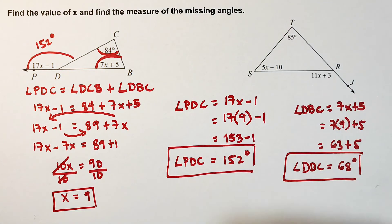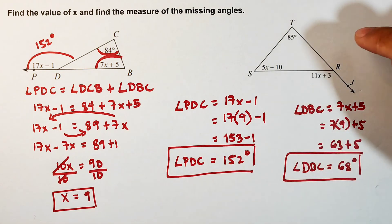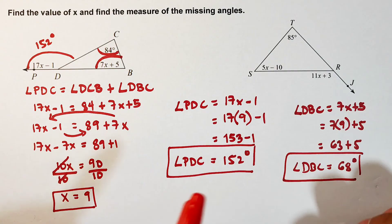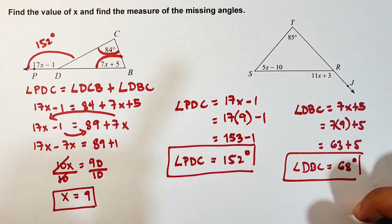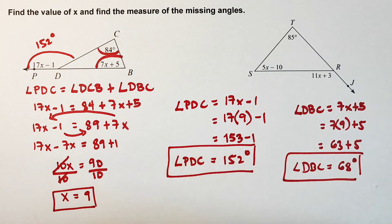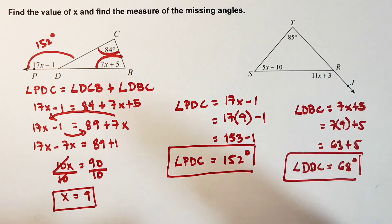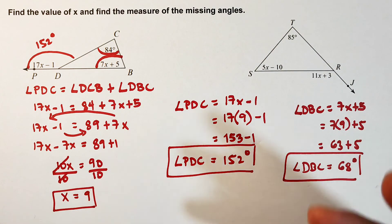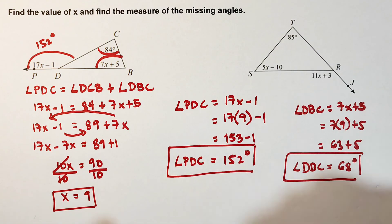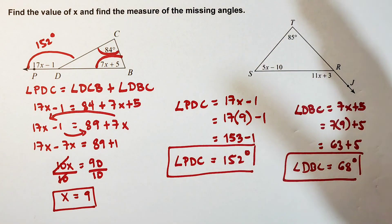For your assignment, please solve for x and find the measure of the missing angle and the exterior angle. I hope you learned something from this video about the concept of the exterior angle theorem and identifying the remote interior angles. If you're new to my channel, don't forget to like, subscribe, and hit the bell button to be updated on our latest uploads. Again, it's me, Teacher. Maraming salamat!